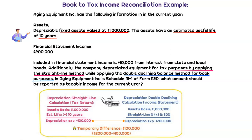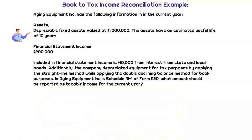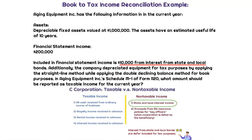We're only accelerating that depreciation in the books and taking straight line — a slower method — on the tax return. Of the $200,000 amount, $10,000 is going to be from state and local interest income. That $10,000 is included in this calculation, but interest from state and local bonds is never going to be included when calculating taxable income. That's what makes this a permanent difference — it's never going to reverse.